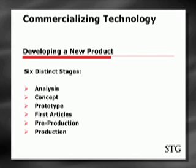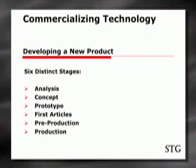And then production is where you turn on the full faucet — now you're going to produce hundreds, thousands, millions — and you're hoping that all of your marketing research is going to be right. Otherwise, you're going to have a lot of stock on your hands. So this is the sixth distinct stage.